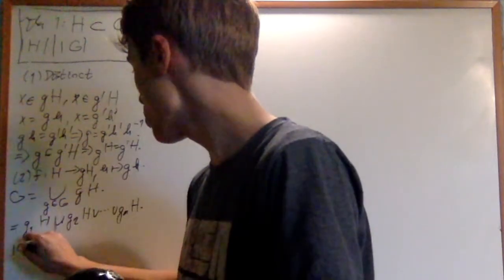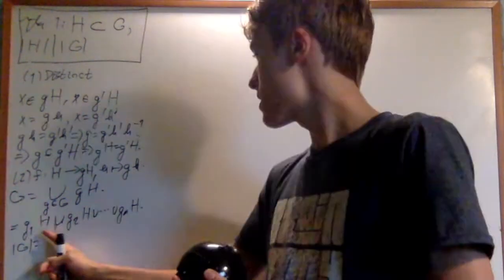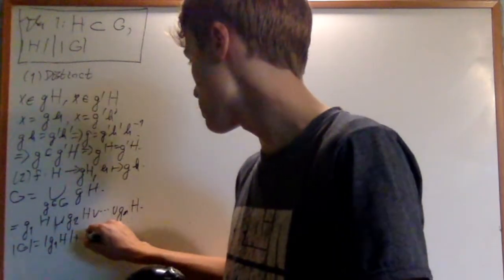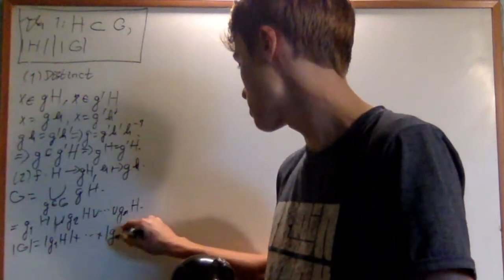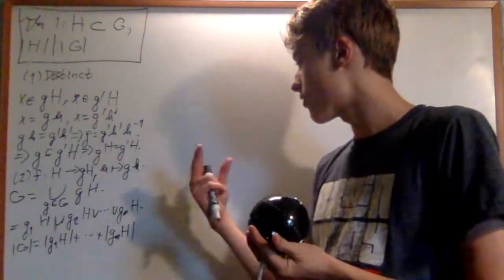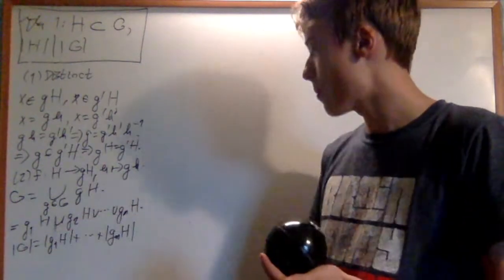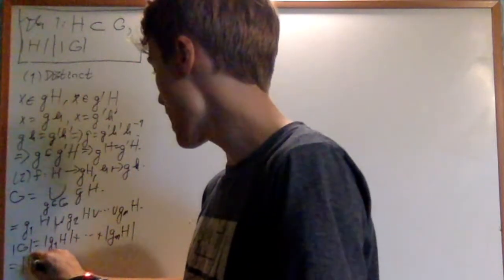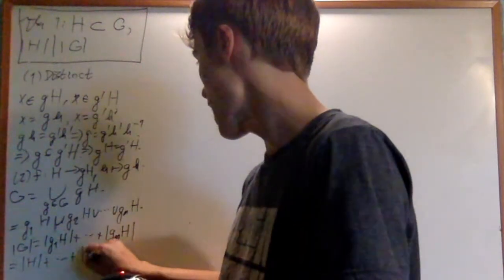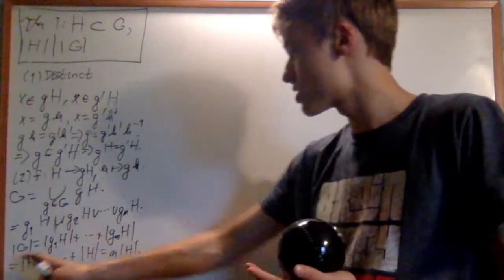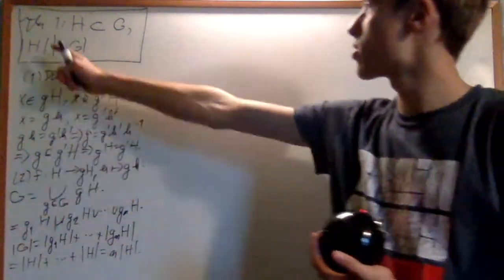The order of G is then going to be equal to — because this is a disjoint union — the order of g₁H plus all the way up to the order of gₙH. Because if you union a bunch of disjoint sets and want to find how many elements are in it, you just add up the number of elements in each set. Each of these has the same size as H by fact number two, so I'm just adding up the order of H, n times — which is n times the order of H. Therefore the order of G is some multiple of the order of H, and the order of H divides the order of G.